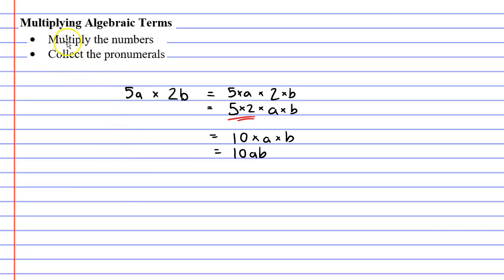Let's now look at our two rules here. First of all it wanted us to multiply the numbers, which we did. We took the numbers 5 and 2, multiplied them to make 10. The next thing we did is we collected the pronumerals. We took the pronumerals a and b, collected them and put them together to make ab.